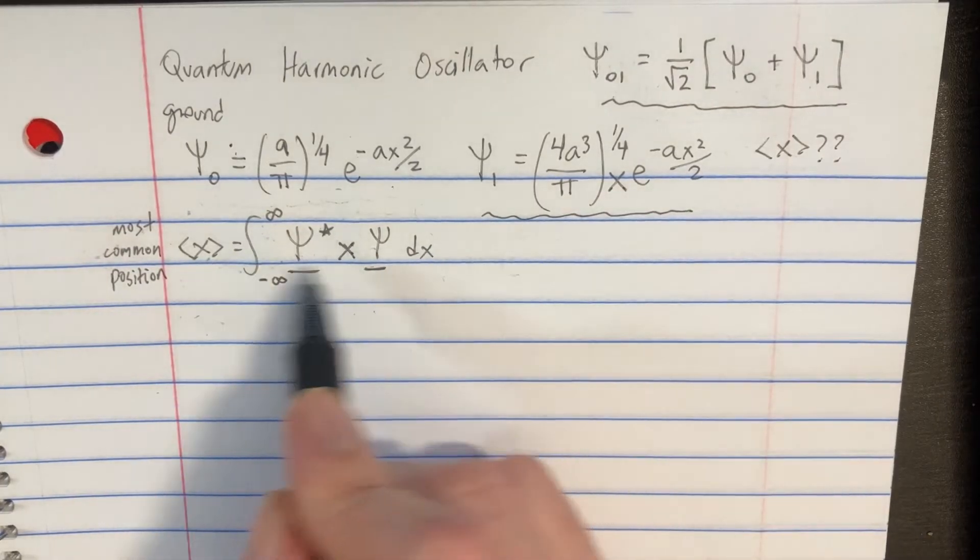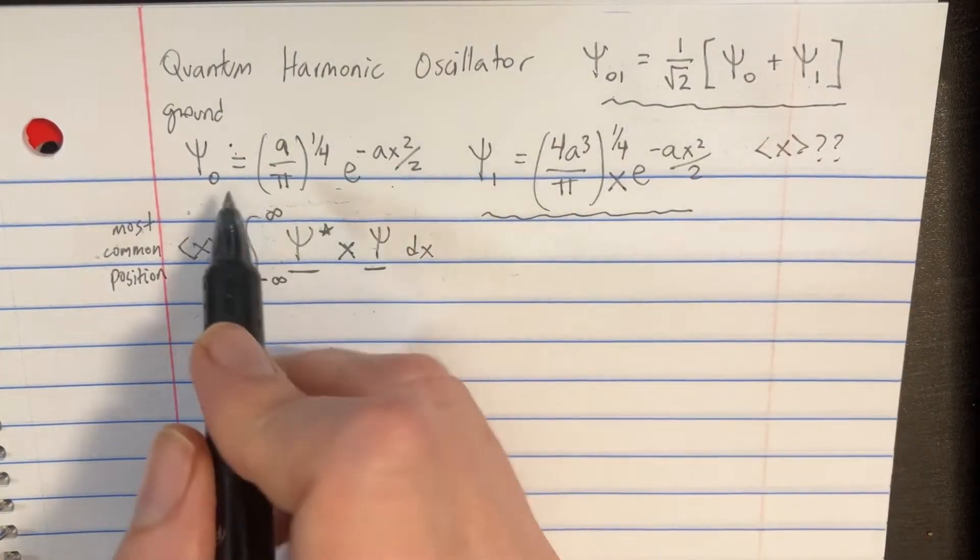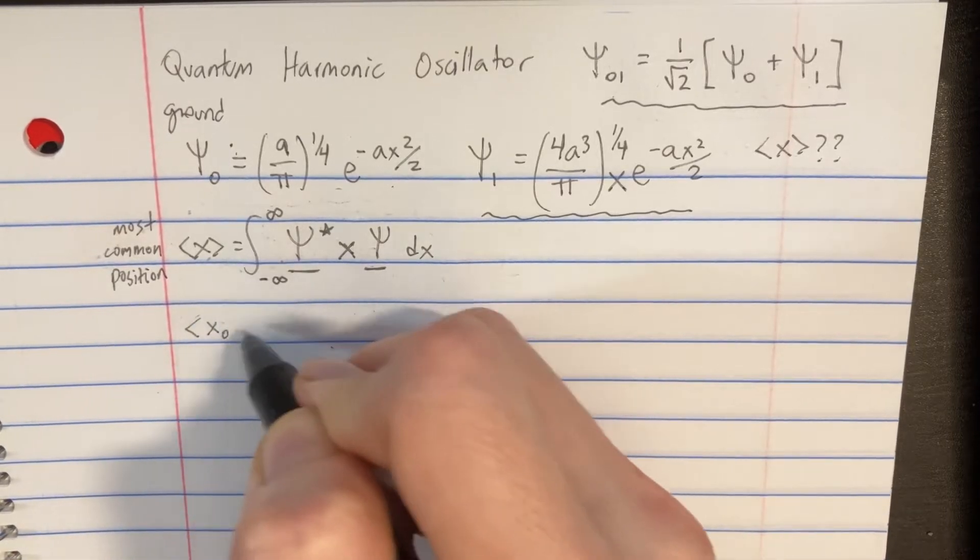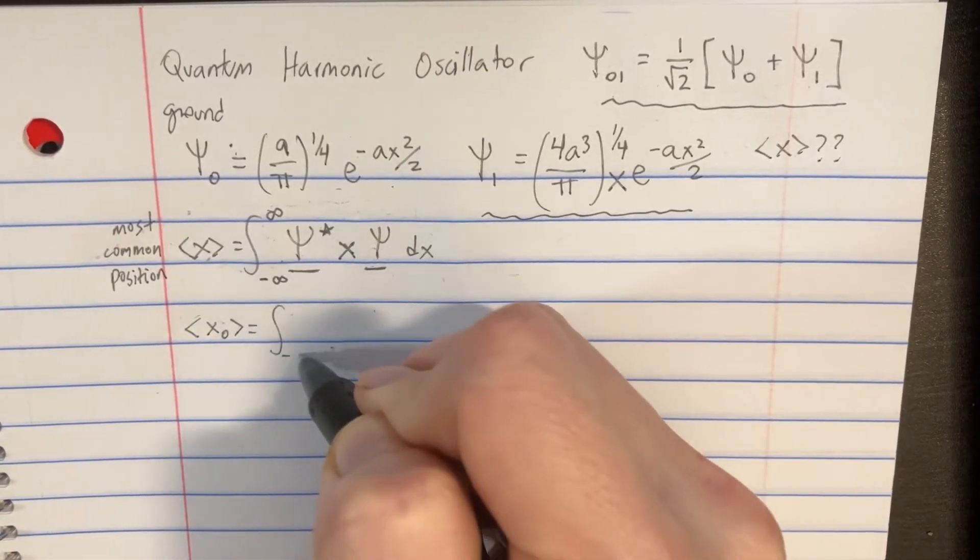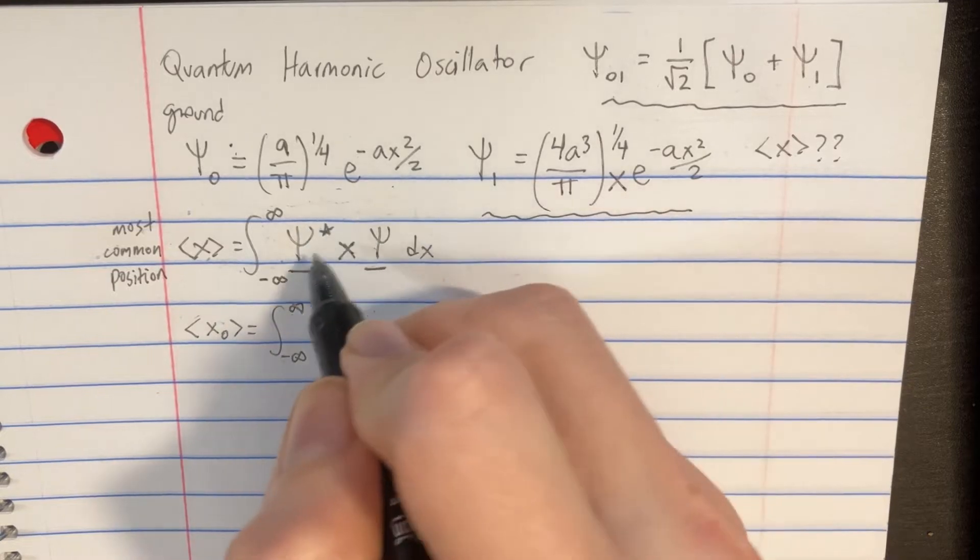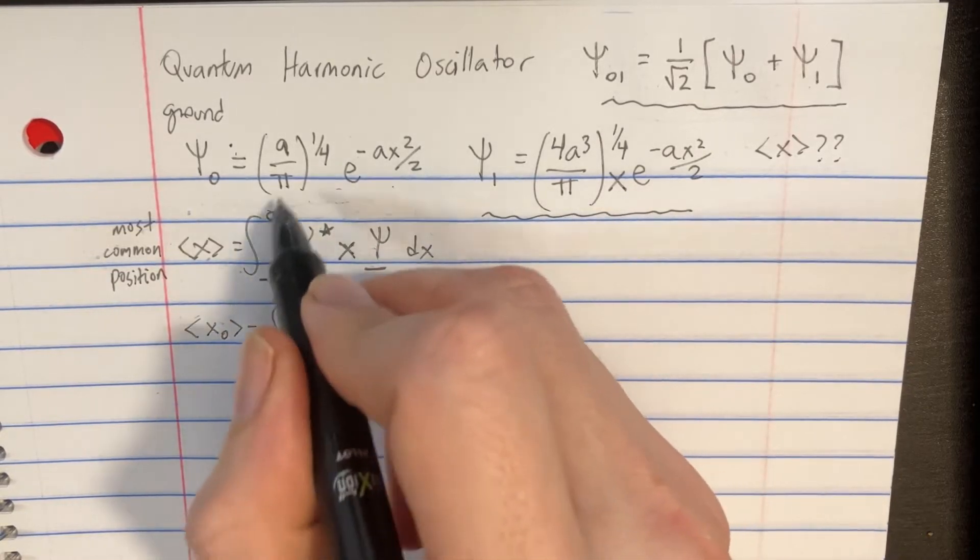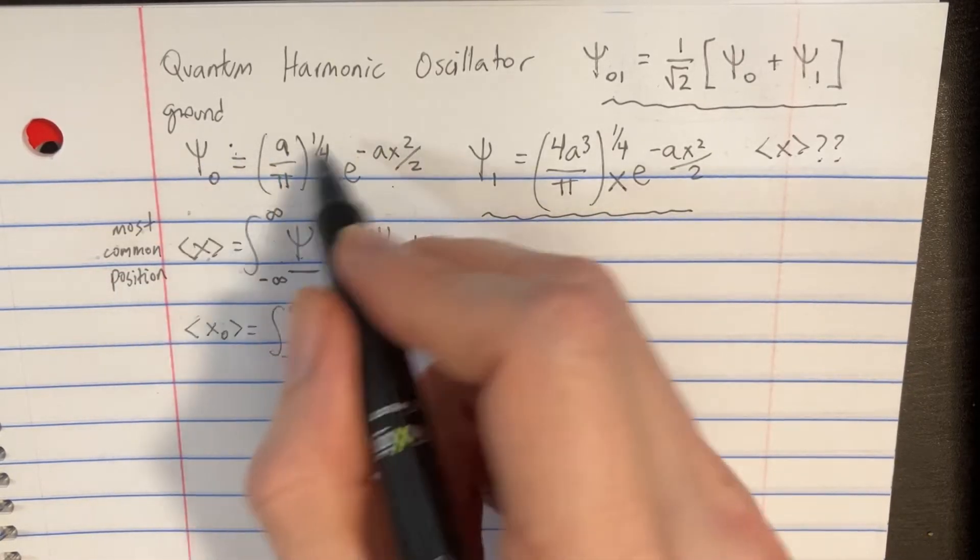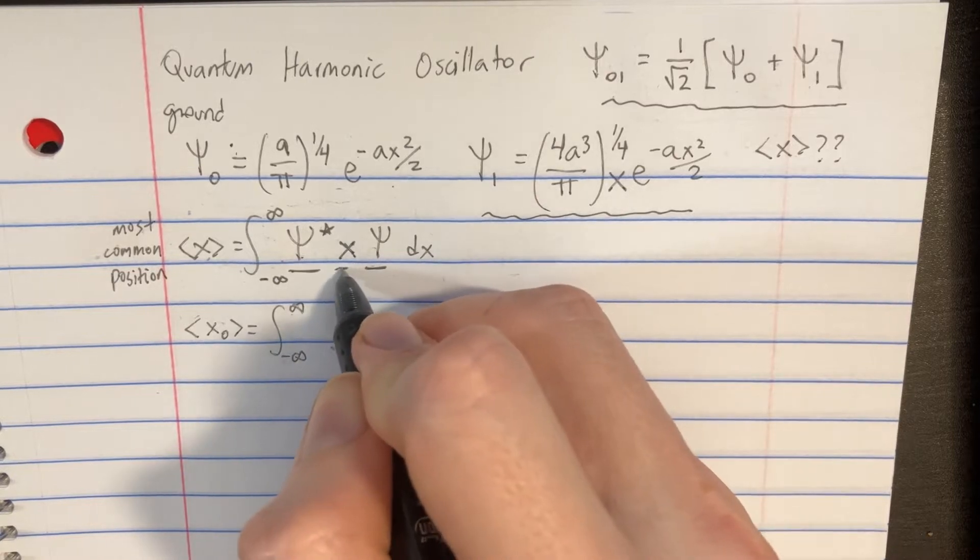Here's the integral we need to set up for all three of these, so let's just start with the first one. We'll say that x0 is going to equal the integral from negative infinity to infinity, and the psi star times the psi is going to be the same thing as psi squared. And then we also have to add in this x.